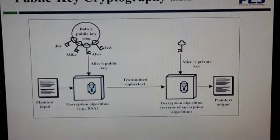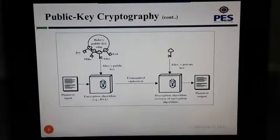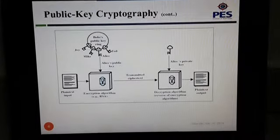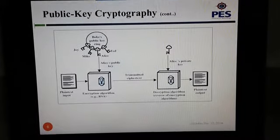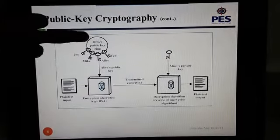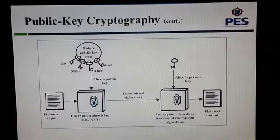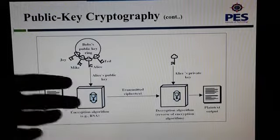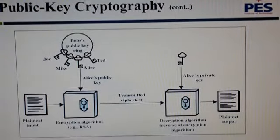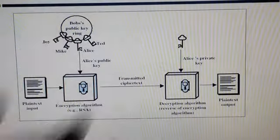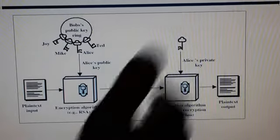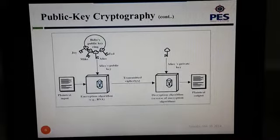We can see here that we have an input and an encryption algorithm — that is RSA — which encrypts the data. There is a public key for the sender's side used for encryption. We encrypt with RSA algorithm and transmit to the receiver side, where it is received and decrypted using the private key, so the receiver gets the original message that was sent.